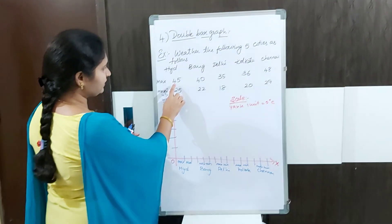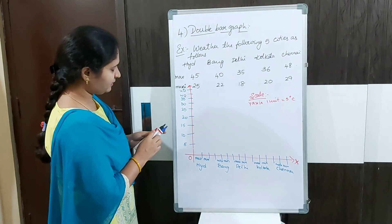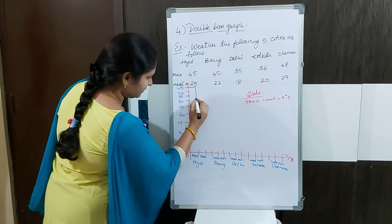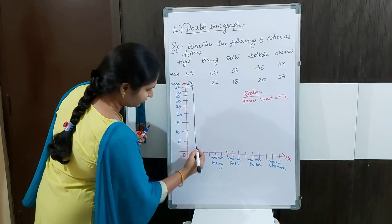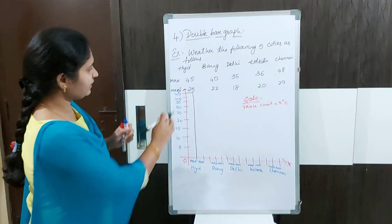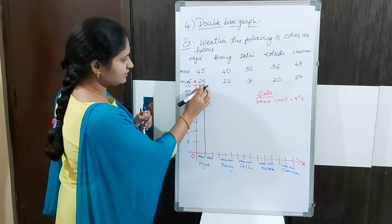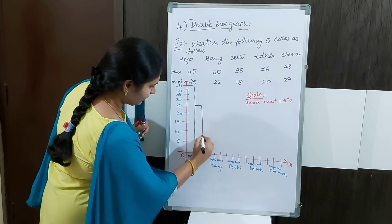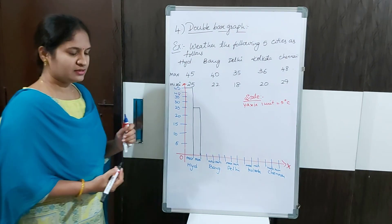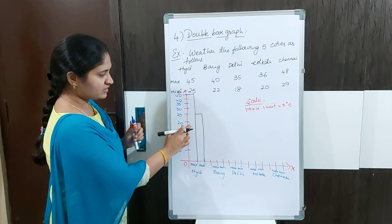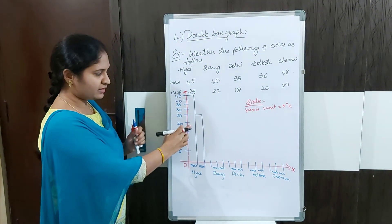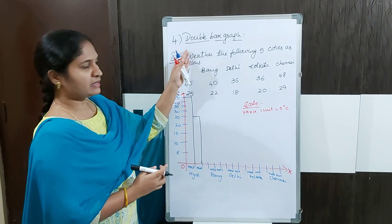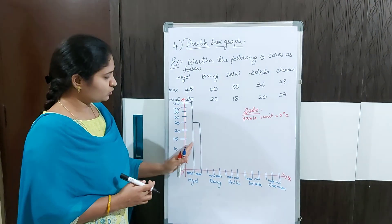The maximum temperature of Hyderabad is 45 degrees centigrade, so I need to draw a bar up to 45. The minimum temperature is 25, so I draw the minimum bar up to 25. From this I can compare the maximum and minimum temperature of Hyderabad. This double bar graph is used to compare two values at a time.